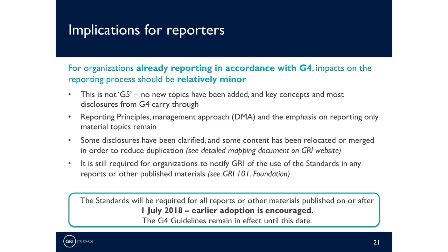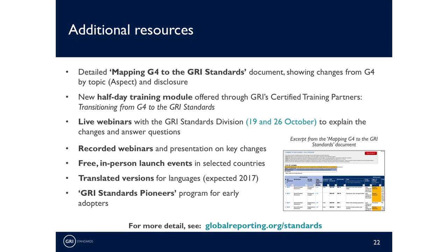It is important to note that reporters will have a generous transition period. The standards will be required for all reports published on or after 1st of July 2018. We do encourage and expect that many organizations will begin using the standards ahead of this timeline. Before we close the presentation today, we wanted to present you with a set of additional resources available to help understand and implement the new standards. The detailed mapping document will be essential for users of G4 to understand changes or clarifications by disclosure or topic. This document allows users to search and filter by standard, disclosure, or type of change and will be available as a flexible Excel-based tool as well as a printable PDF resource.